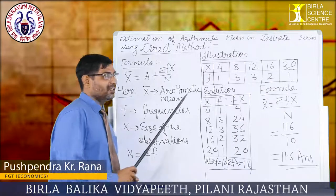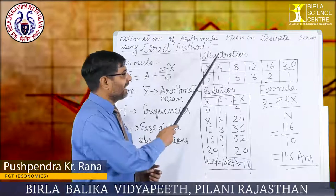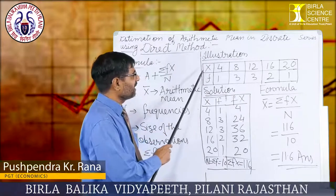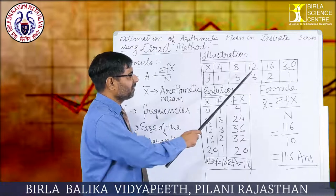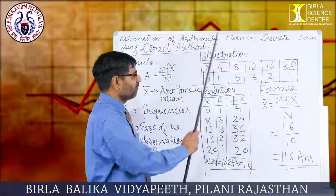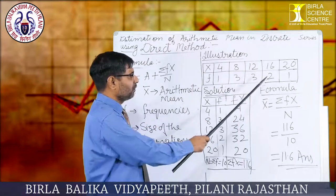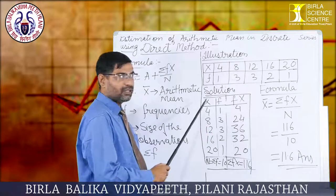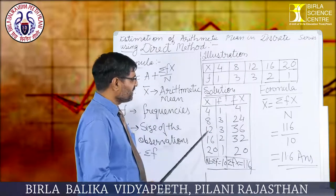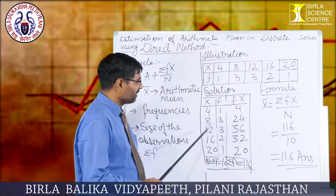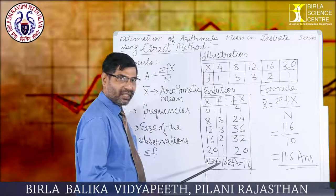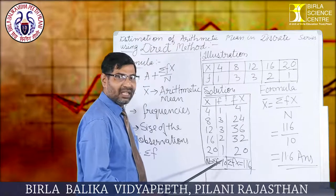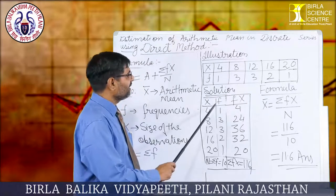Now let us understand it with the help of this illustration. The values given are x: 4, 8, 12, 16, and 20, and f: 1, 3, 3, 2, 1. The first step is to get the sum total of the frequencies: n = Σf = 10.